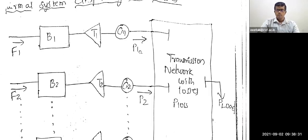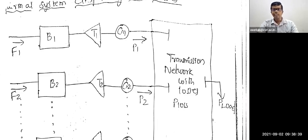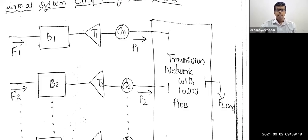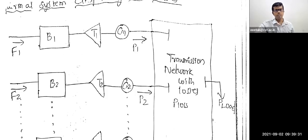Good morning. Today we are going to see about economic load dispatch of n thermal generating units with considering the losses. Whereas in the previous case, losses were not considered. So what we are going to do is we are implementing the losses, that is P_loss — P suffix loss — in the objective function.